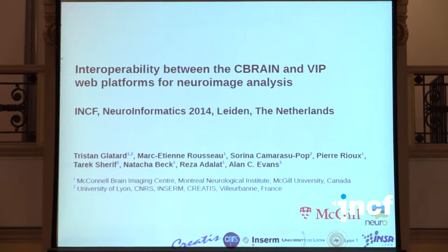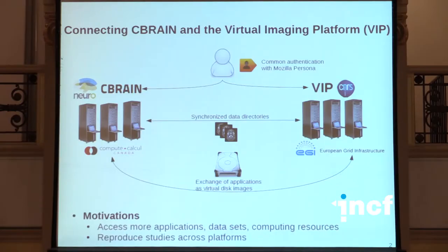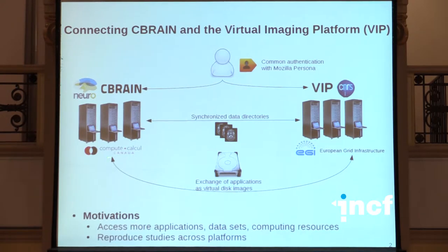Today I would like to talk about the interconnection between two processing platforms: the C-Brain platform developed at the MNI in Montreal, and the Virtual Imaging Platform developed at CNRS in France. Basically, these two platforms can execute pipelines on clusters. C-Brain can run on the Canadian grid, and VIP can run on the European grid infrastructure.